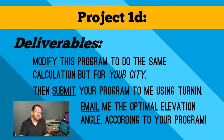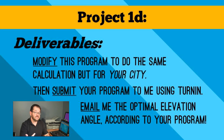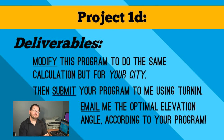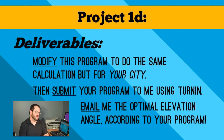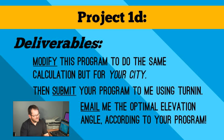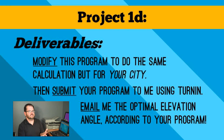Once you get it working for Evansville and you can get the same answer as I got, modify the program so that it works for the city I sent you — the latitude, longitude, time zone, and so on for that city — and then submit your program to me using Turnitin. Email me your optimal elevation angle according to your program. You'll see this on the manageable steps page under deliverables for Part 1D so you can keep track of everything you need to send in. It sounds a little spooky and it's a little hard to wrap your head around how 1D works, but actually 1D is in many ways the easiest part of this project. Please let me know if you have any questions.